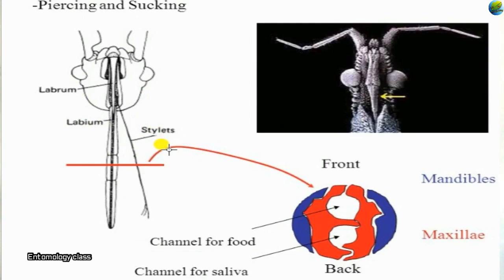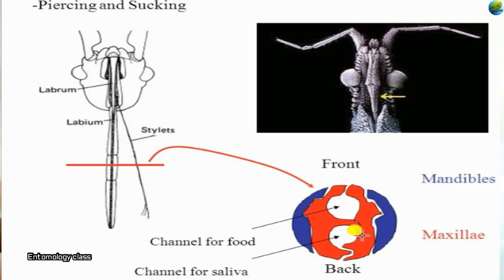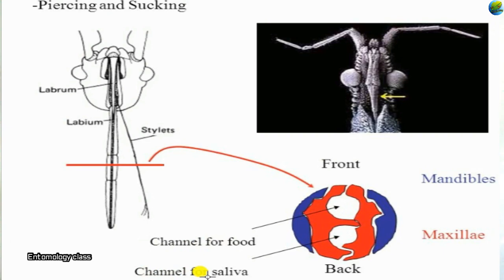The two maxillary stylets have grooves inside them. When the two maxillae come together facing each other, they have double grooves — one line and two lines — forming a tube-like structure. This creates two canals: the upper canal is the food canal and the lower canal is the salivary canal.